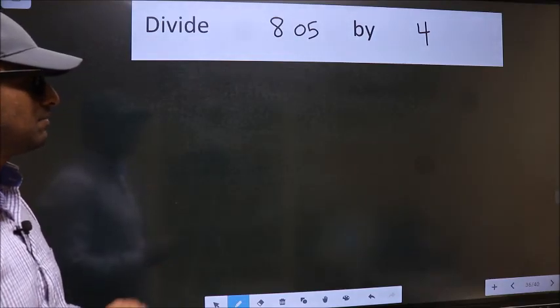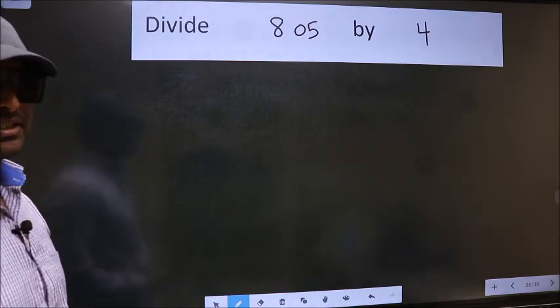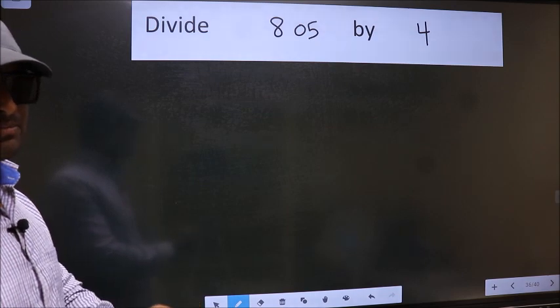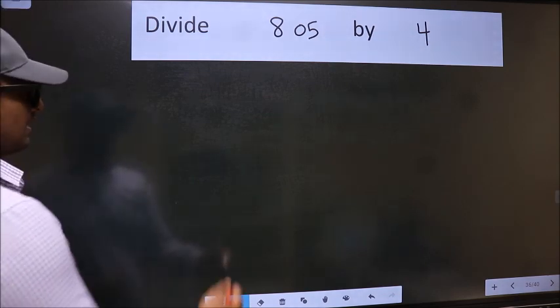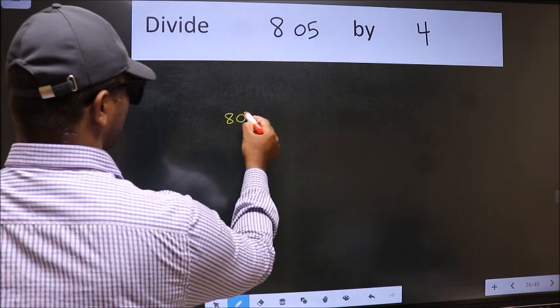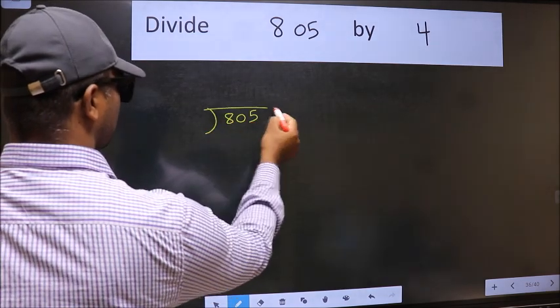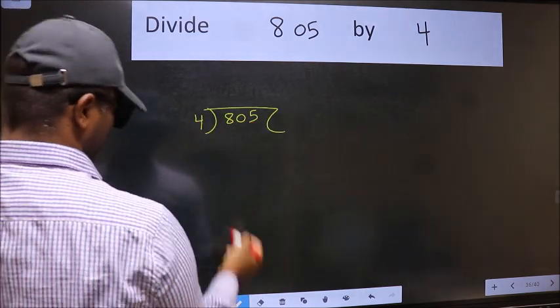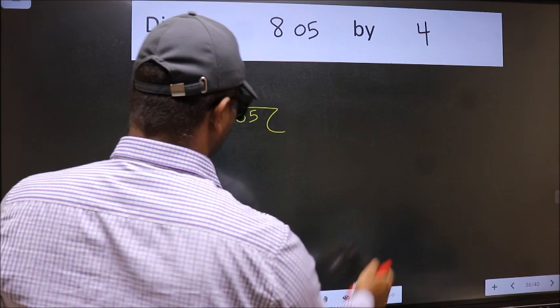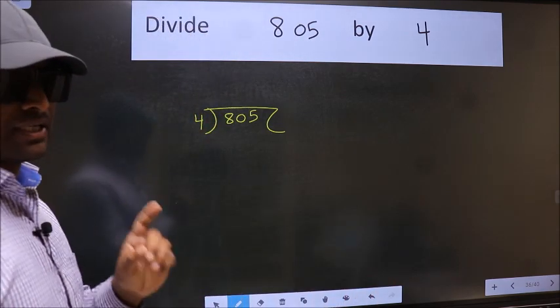Divide 805 by 4. To do this division, we should frame it in this way. 805 here and 4 here. This is your step 1.